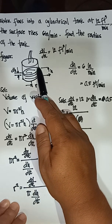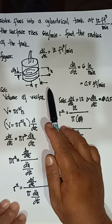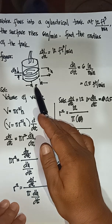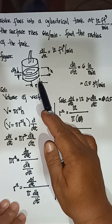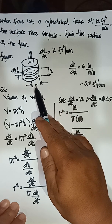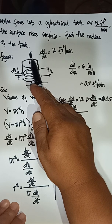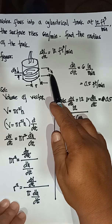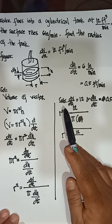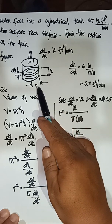Even though there is an increase of water inside the cylindrical tank, it is very important that you determine what is constant and what is changing in the problem. Radius is constant because whenever there is an increase of water inside the cylindrical tank, there is no corresponding change in the radius. However, there is a corresponding change in the height of the water, so height and volume are changing while radius is constant.